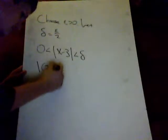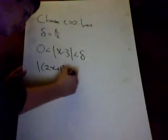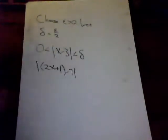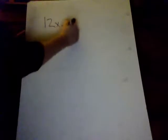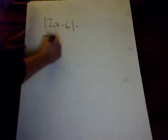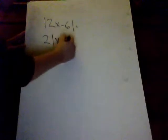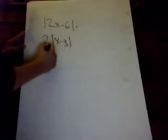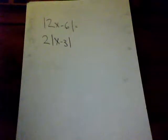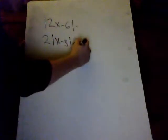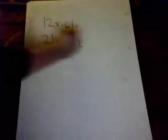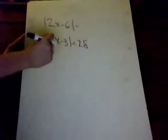Then, |2x + 1 - 7|, alright? Is equal to |2x - 6|, which equals |2 times (x - 3)|, which equals, so let's see, |2(x - 3)| is less than 2 delta. Delta, 2 delta, alright?